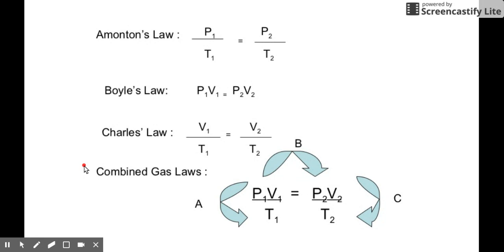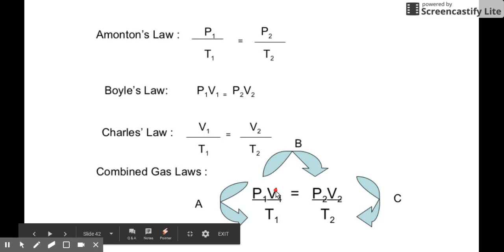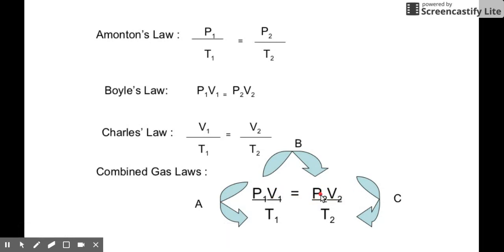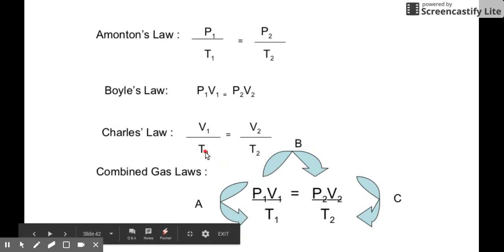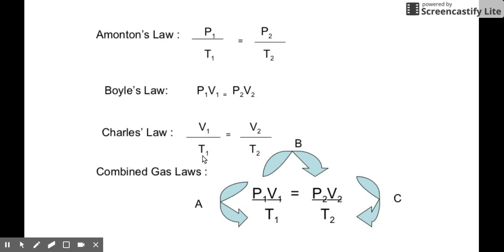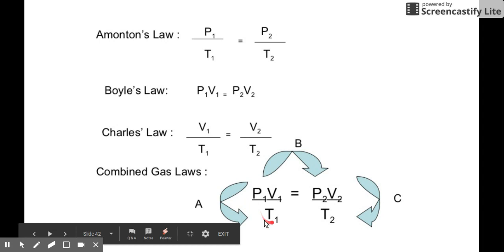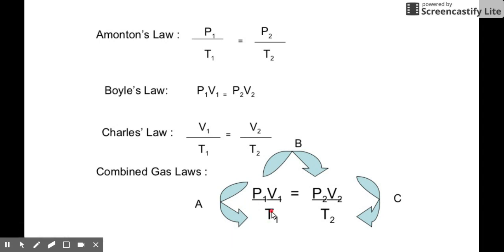The Combined Gas Law is easy to remember because you're combining all three variables and their placement. For pressure, P1 is always on the left side in the numerator. Same thing with V1 — P1 and V1 are always multiplied together in the numerator. P2 and V2 are the same but on the right side. For temperature, whether in Amonton's or Charles' Law, temperature is always at the bottom — T1 is the denominator on the left side, and T2 is the denominator on the right side.